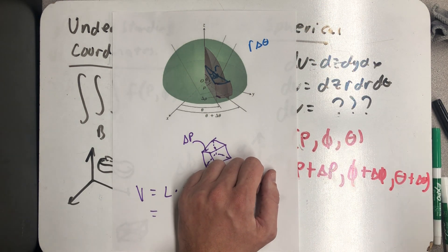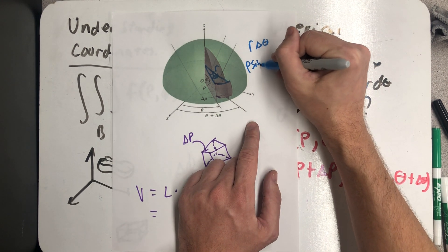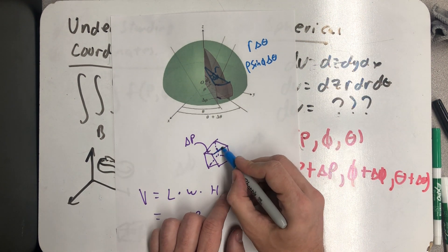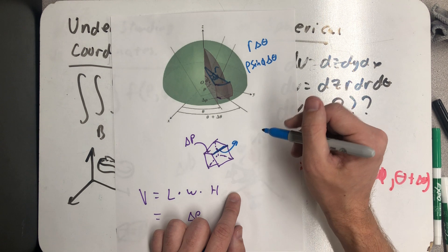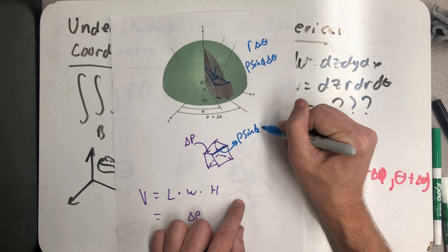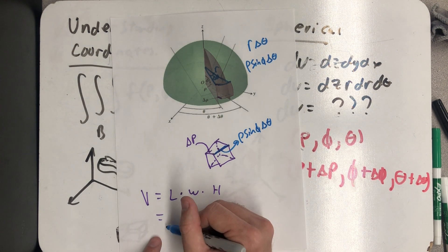Okay, well, I don't get to use an r here. I want to be in spherical coordinates. Well, fortunately, I know that r is equal to ρ sin φ. And so I'm going to say that's this dimension of the box. And I'll put that in place of the length.